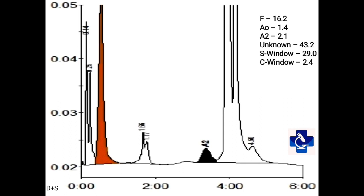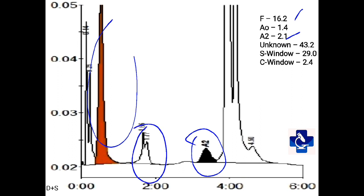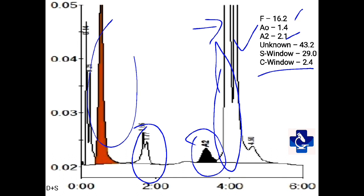In this picture, hemoglobin F is around 16.2% — quite raised. A2 is around 2.1%, which is normal. There is a small peak of A0 at around 1.4%. There is an unknown fraction of around 42.2%. We have the S window forming near about 29% of hemoglobin and a C window of 2.4%. So we have the S variant along with an unknown variant falling between S and A2 with a retention time similar to D. This is a double heterozygous HbD and HbS. The C window is actually modified hemoglobin, either D or S.